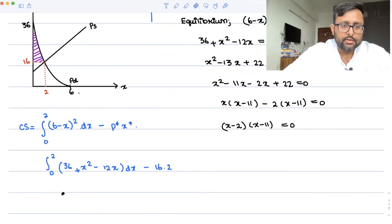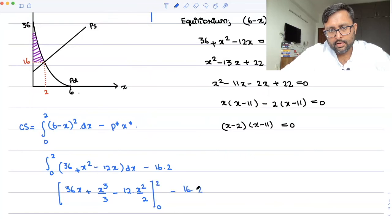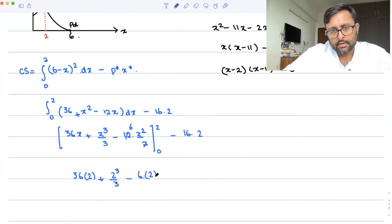And when you will just integrate it, this is going to come out to be 36x plus x square by 3 minus 12x square by 2. And you have to find out for these limits minus 3 into 2. We just have to plug in the value for 2. So this comes out to be 6 out here. So 36 into 2 plus 2 cubed by 3 minus 6, 2 square minus 16 into 2.